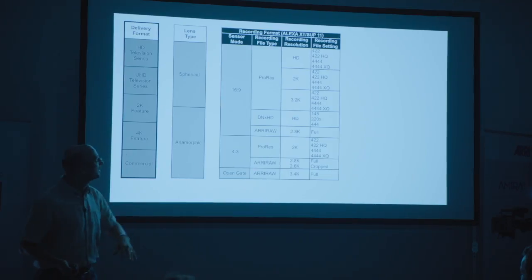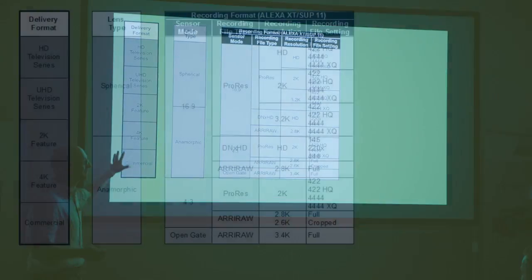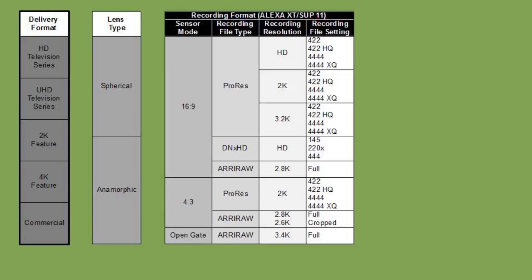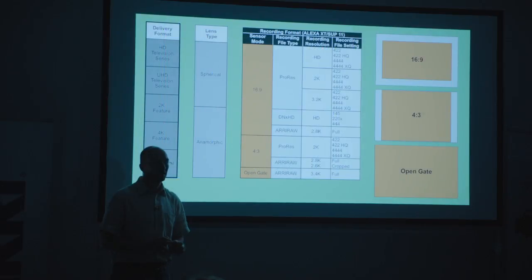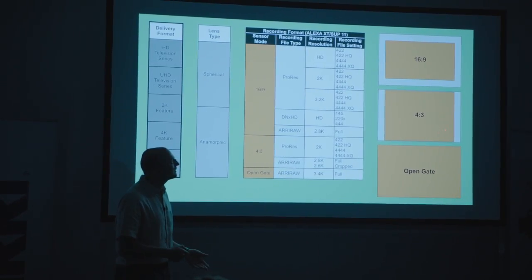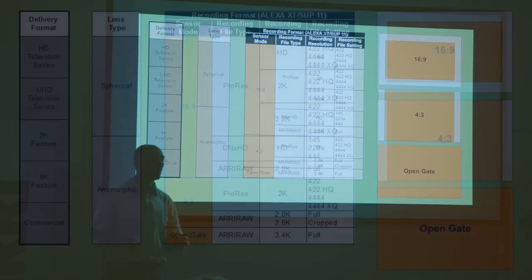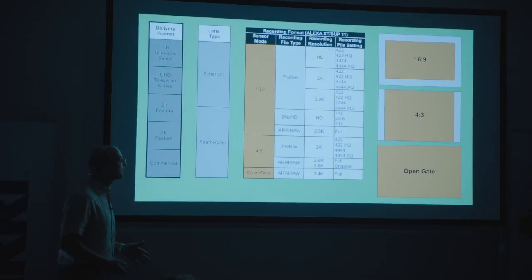Let's look at the sensor mode — the first part of the recording format. The sensor mode tells you the aspect ratio of the area you use on the sensor. 16x9 is clearly 1.78:1. 4x3 is the same area we used to have on 35mm film, 1.33:1. And Open Gate is 1.5:1 — that's the whole sensor, where every photosite in the Alexa is actually being used.